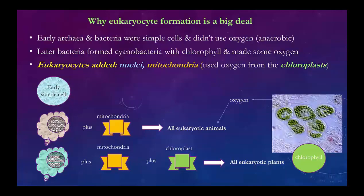The early simple cells stayed as simple cells and are still here today. Then the eukaryocytes came along and divided depending on structure. The nuclear DNA runs all metabolic processes. Those that add mitochondria for aerobic metabolism become eukaryotic animals. The other type adds both mitochondria and chloroplasts and becomes eukaryotic plants. The plants are green because chlorophyll is green; they make oxygen and glucose, which eukaryotic animals need to exist.